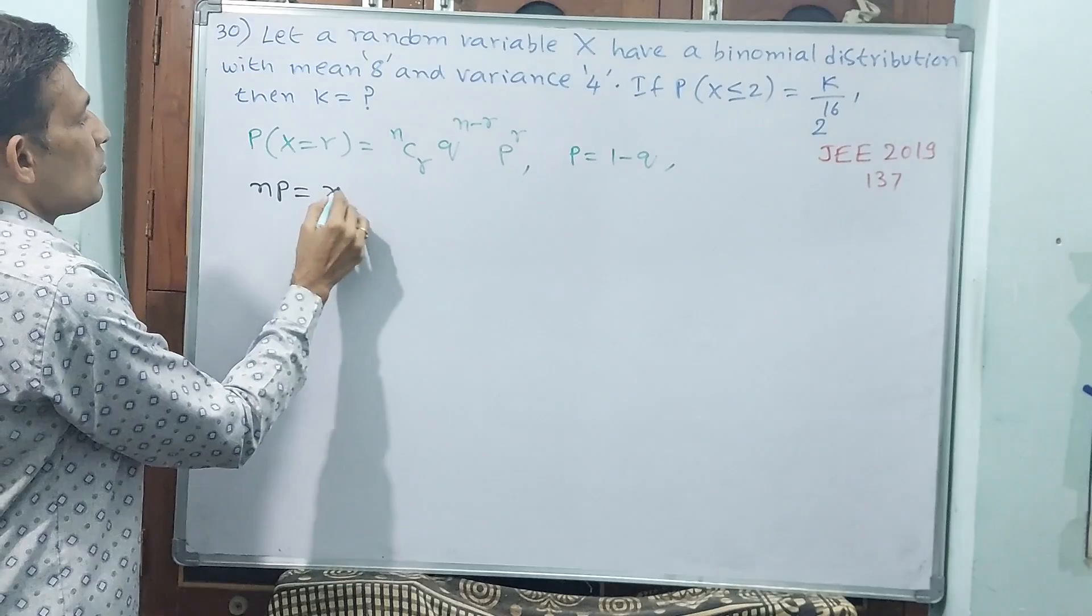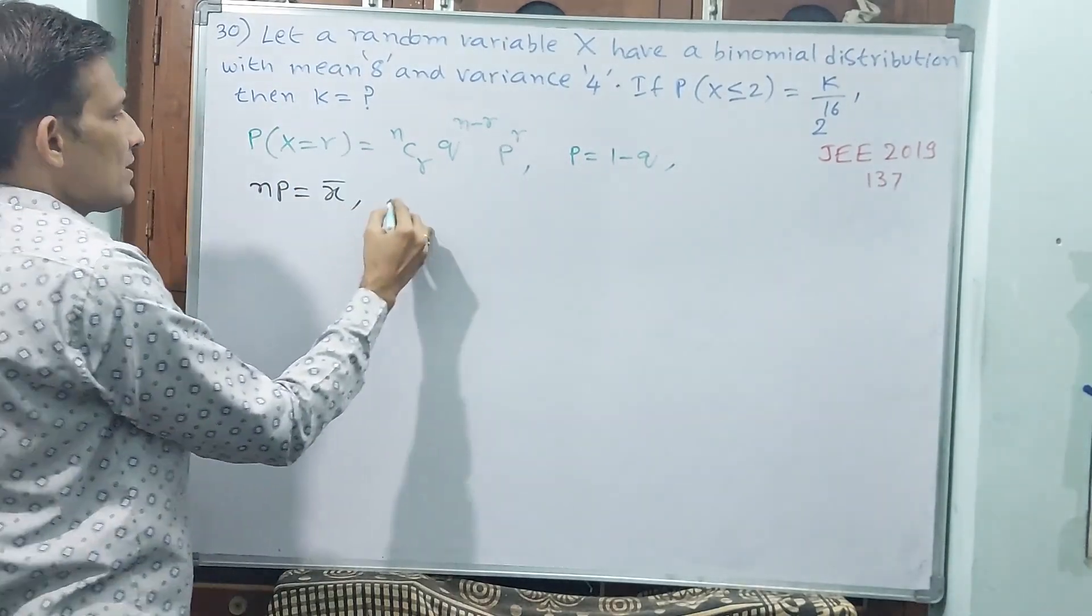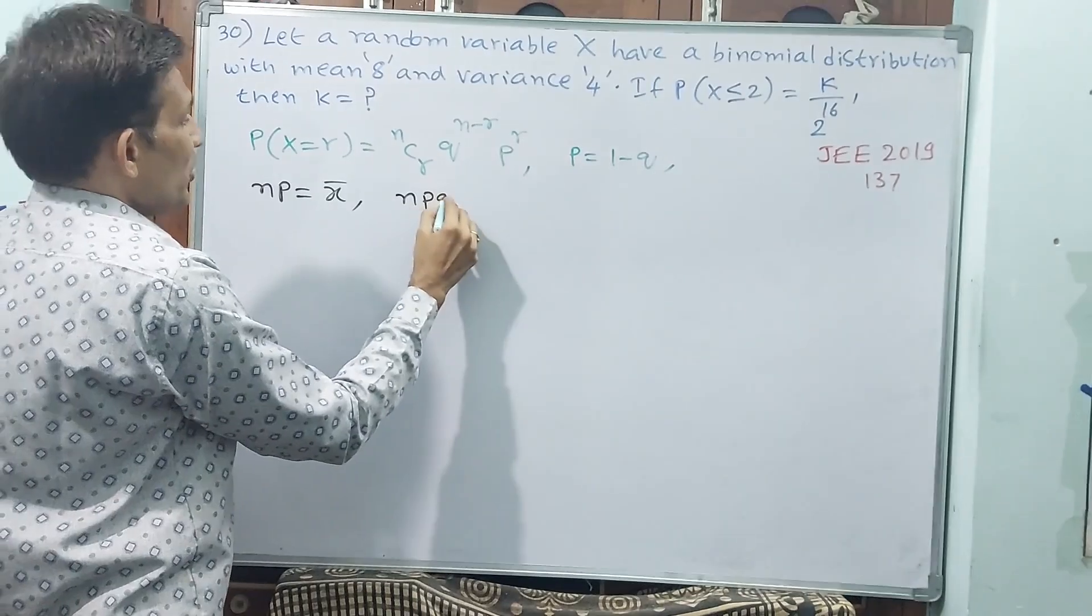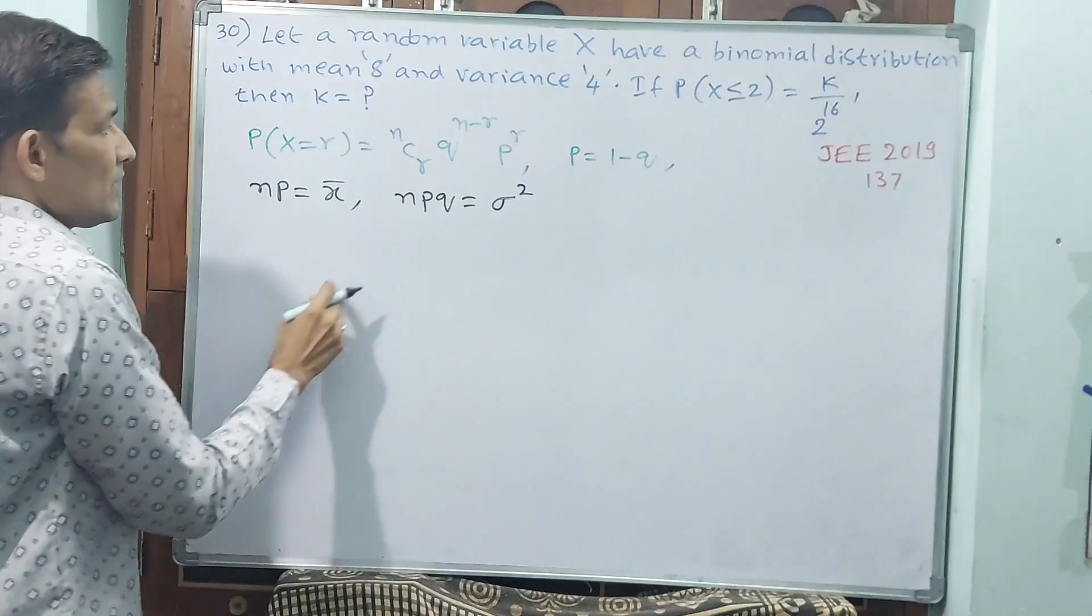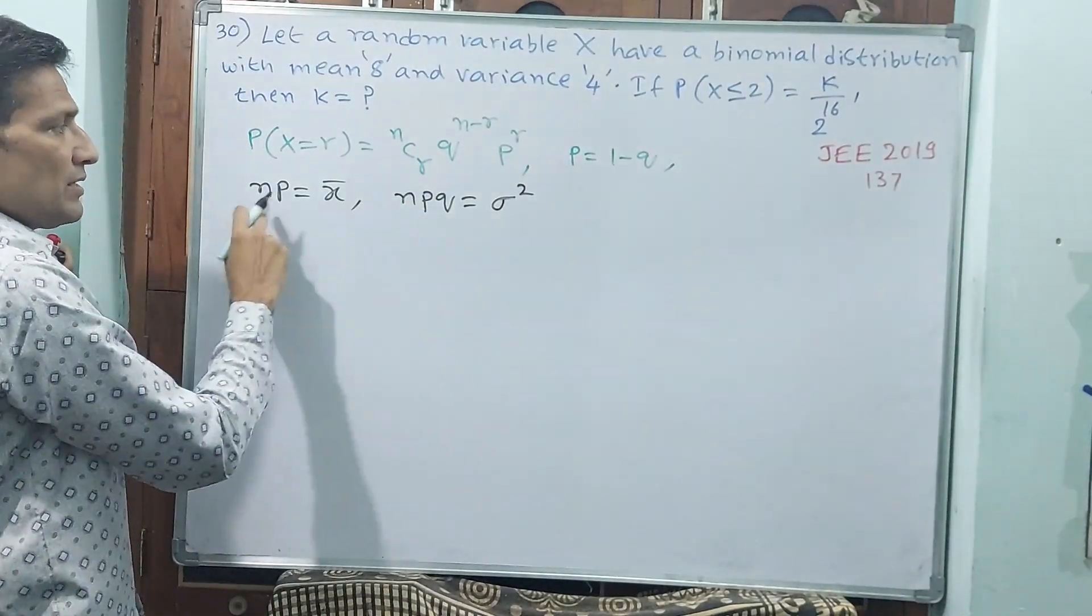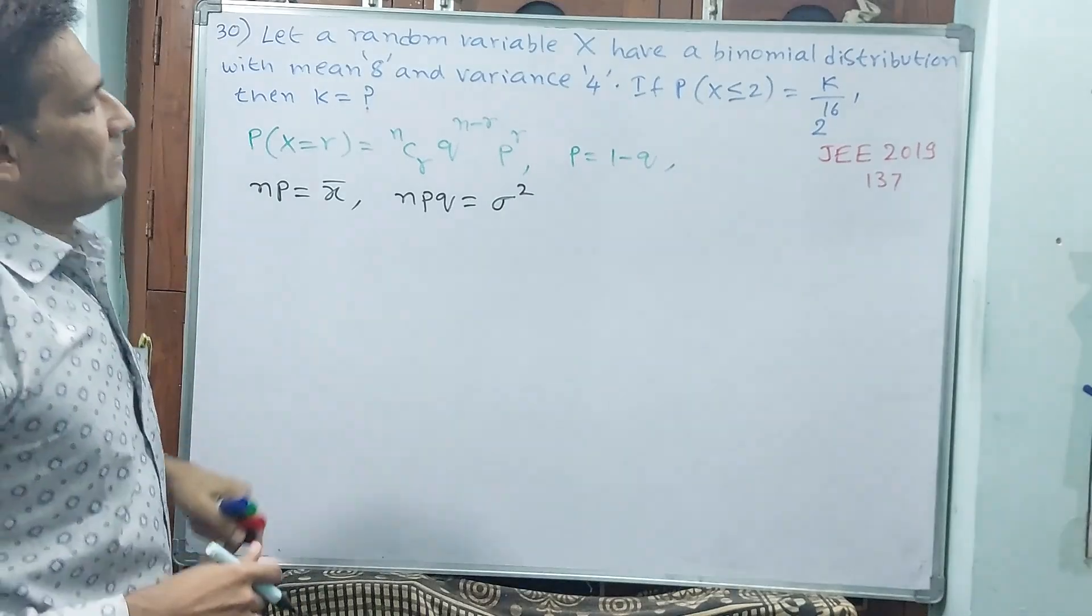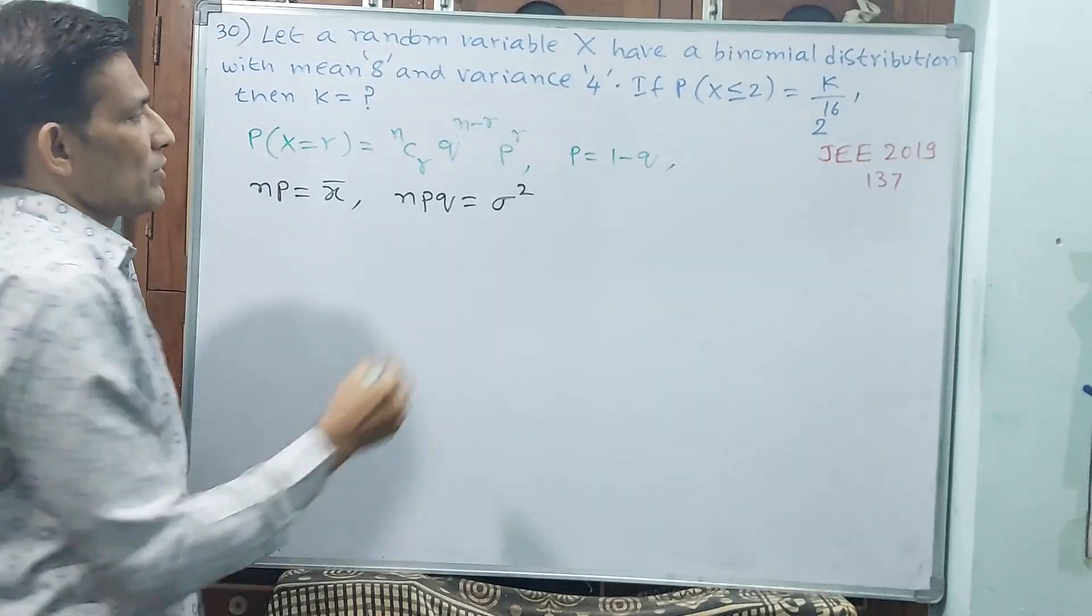Now, np = mean. This is one formula. npq = variance. Variance also they have given. From variance we are going to get npq, means p, n, r we have to get. These are formulas 1, 2, 3, 4. These four formulas we have to take.